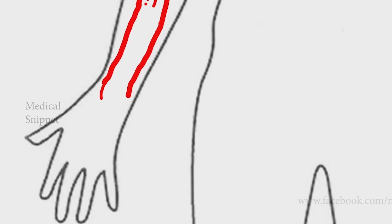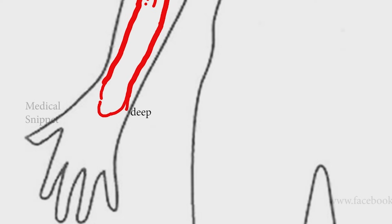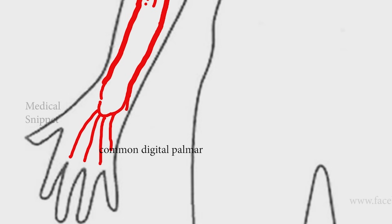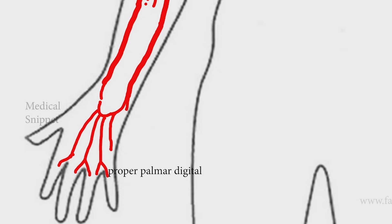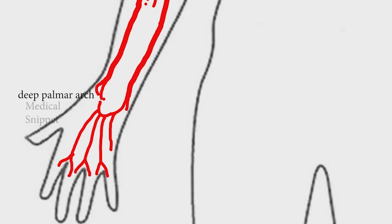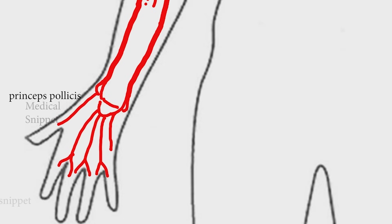The ulnar artery at the wrist divides into superficial and deep branches. The superficial branch forms the superficial palmar arch, which gives rise to four common digital palmar arteries, which in turn give rise to proper palmar digital arteries. The radial artery continues as the deep palmar arch, anastomosing with the deep branch of the ulnar artery. The deep palmar arch gives rise to the princeps pollicis artery and the radialis indicis artery.